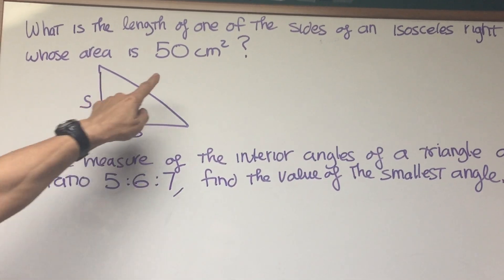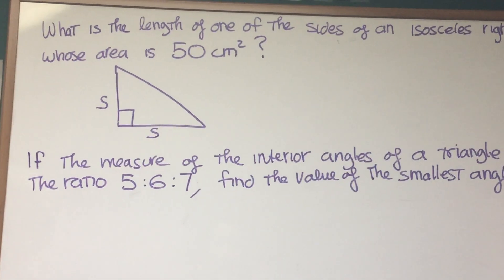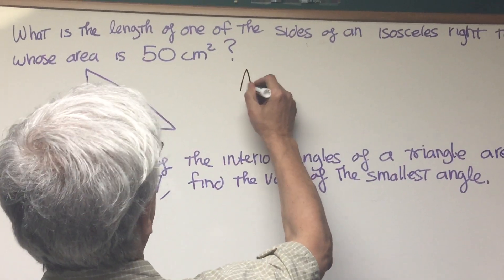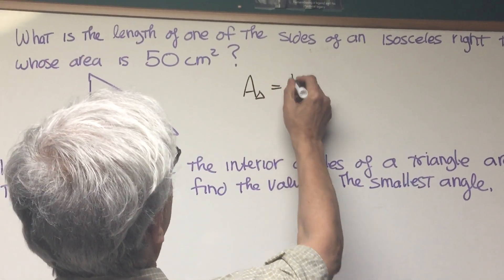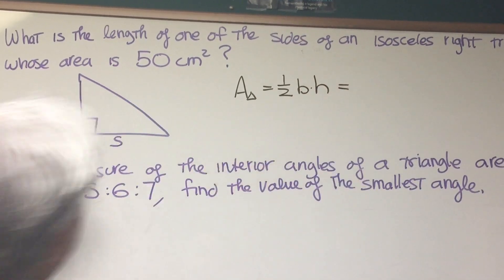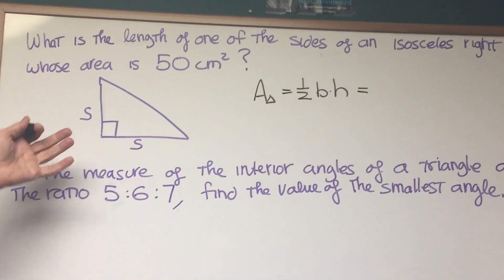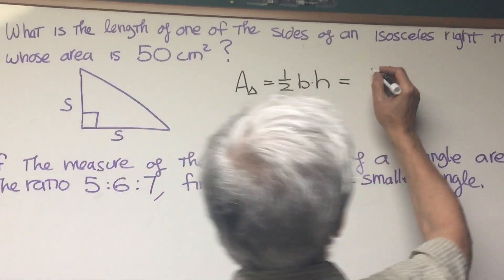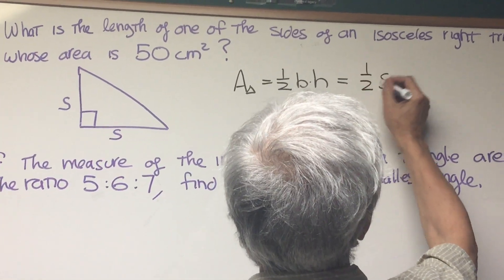Okay, so whose area is 50 centimeters squared. Well, the area of a triangle, no matter what, is one-half the base times the height. In this case, the base and the height are both equal. It's isosceles, so it's one-half s squared.